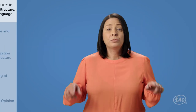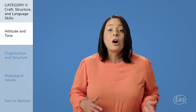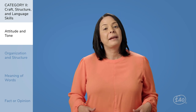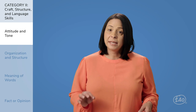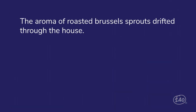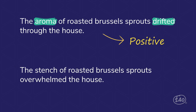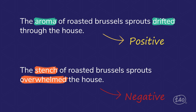We need to discuss how to identify an author's attitude. How authors feel about the subject they are writing about often comes out in their work. Let's look at how descriptive language can help us identify an author's attitude. Consider: 'The aroma of roasted Brussels sprouts drifted through the house.' We can assume the author enjoys Brussels sprouts based on the word choice of 'aroma' and 'drifted' — both words have a positive connotation. Now: 'The stench of roasted Brussels sprouts overwhelmed the house.' The words 'stench' and 'overwhelmed' feel negative, so we can assume the author does not like Brussels sprouts — a negative connotation.